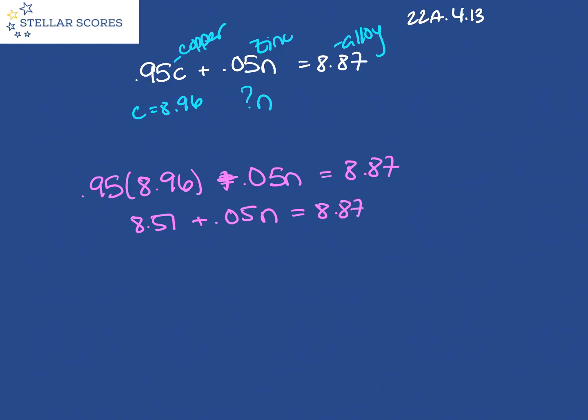Subtract the 8.51 from each side, 0.05N is equal to 0.36. Divide each side by 0.05. N is equal to 7.2.